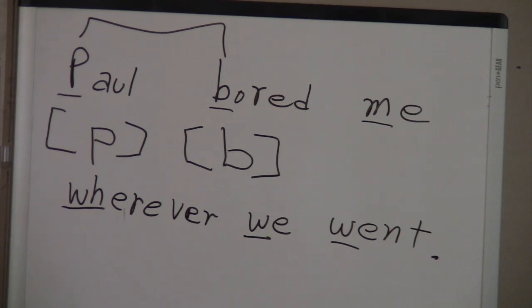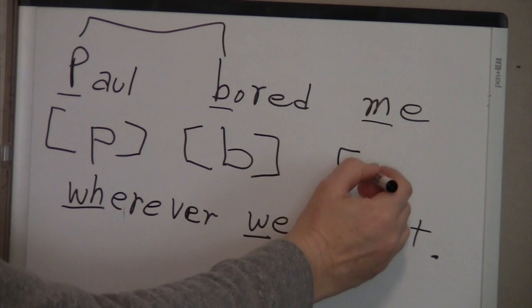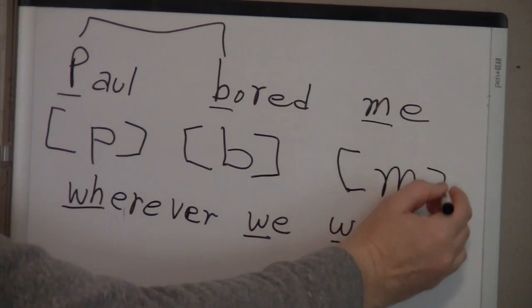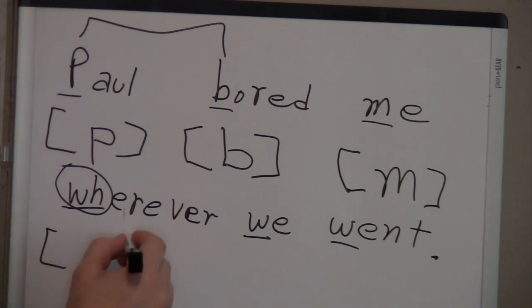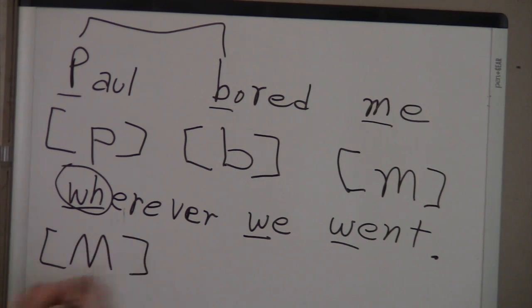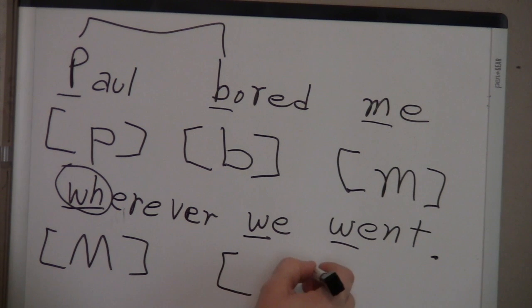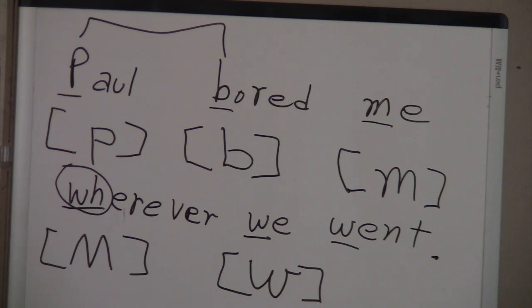The phonetic symbol for muh is a lowercase m. The phonetic symbol for the voiceless wh sound — that 'huuh' sound — which isn't used much anymore, is the voiceless wh symbol. And the symbol for the voiced w sound, which is basically what we use today for all of those words, is just a lowercase w.